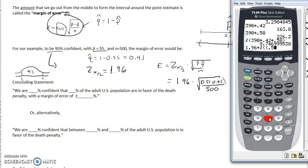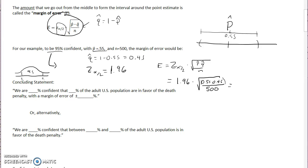So we're going to do 0.55 times 0.45. We need to work that out on top, and then we divide that by 500, and then we close the parentheses for our square root, and we get 0.0436. So our margin of error is 0.0436.